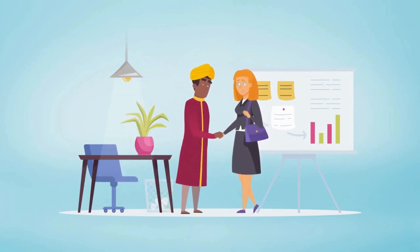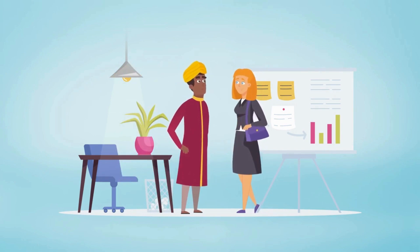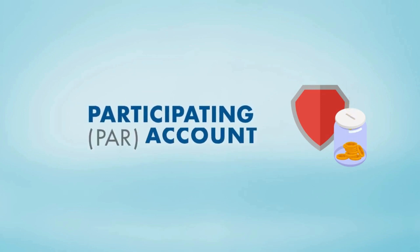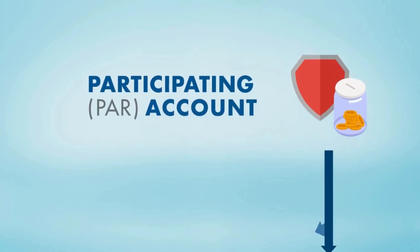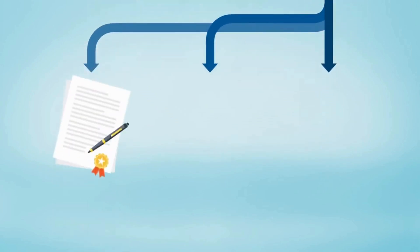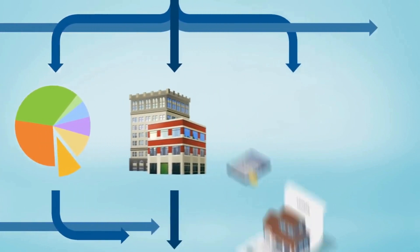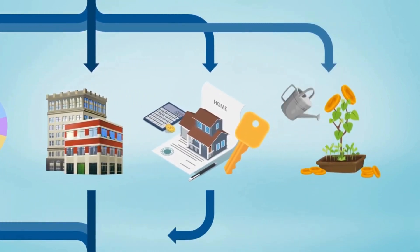Raj wants to know more about the annual dividend payment options. When he pays his premium, the money goes into an account shared with other participating whole life policyholders. This account is called a participating or PAR account. The insurance company then invests the money from the PAR account into bonds, equities, real estate, mortgages and more.